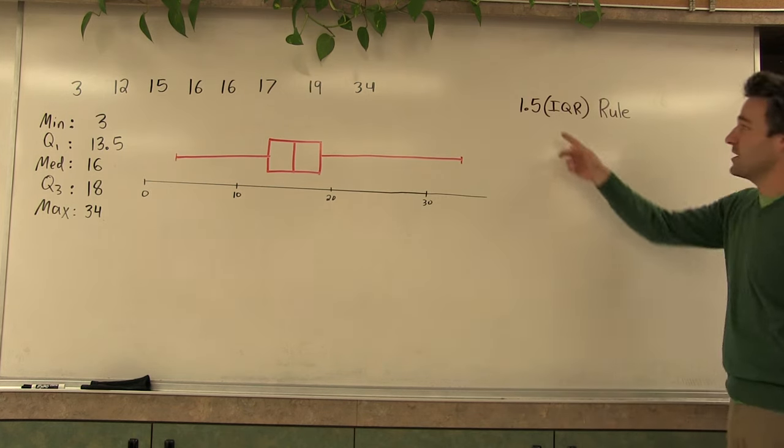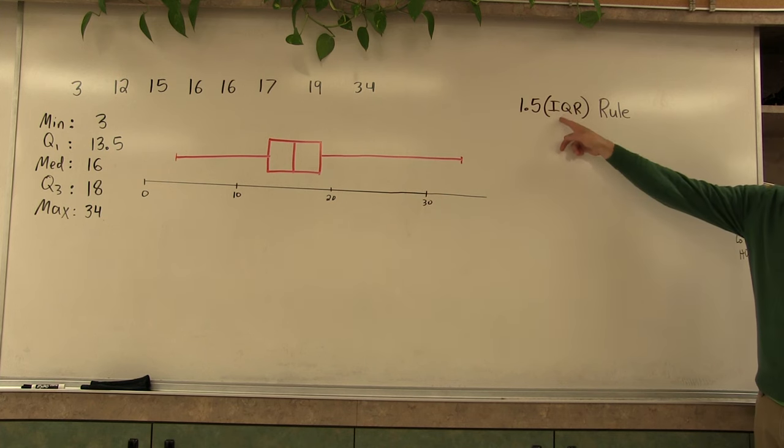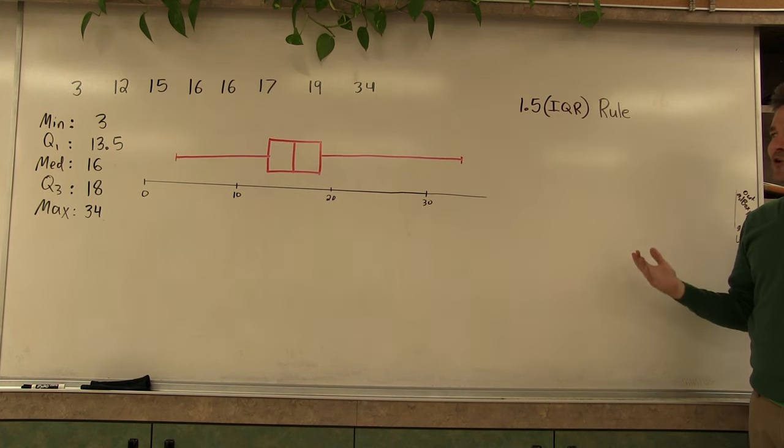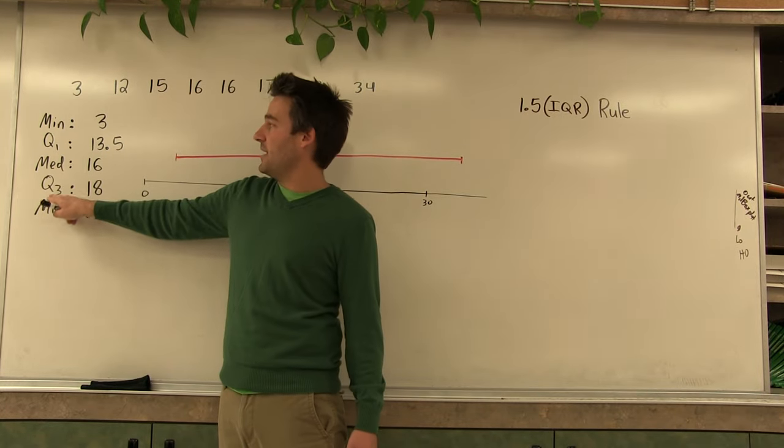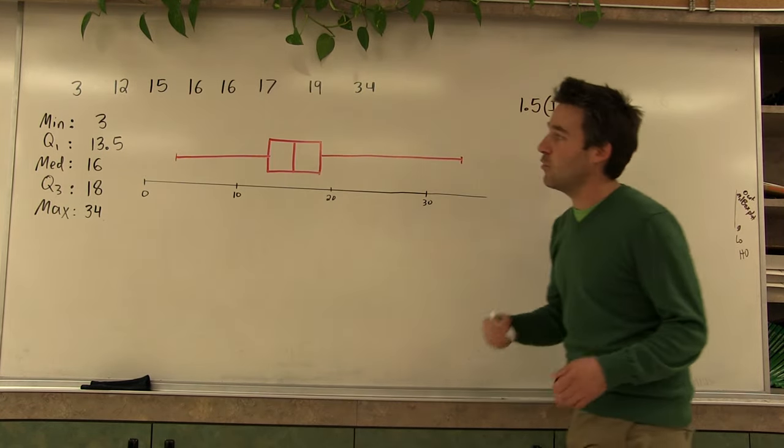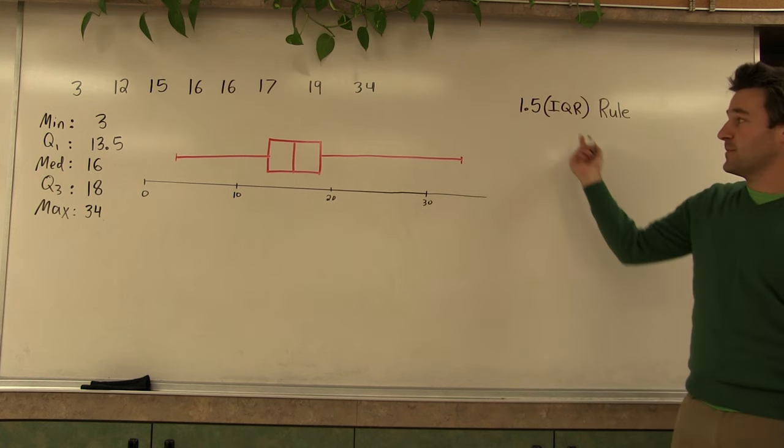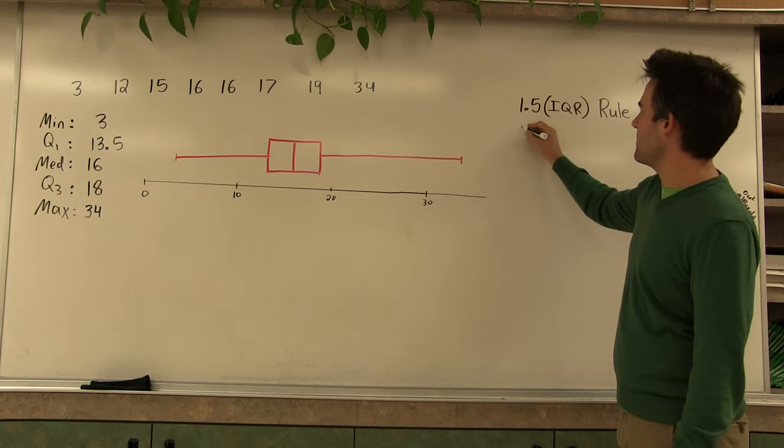To do that we use something called the 1.5 interquartile range rule. The interquartile range can be calculated by taking quartile 3 and subtracting quartile 1 from it, and then we're going to multiply that by 1.5. So let's start with that.